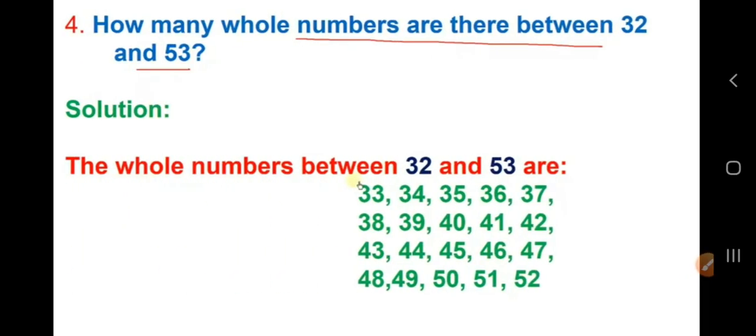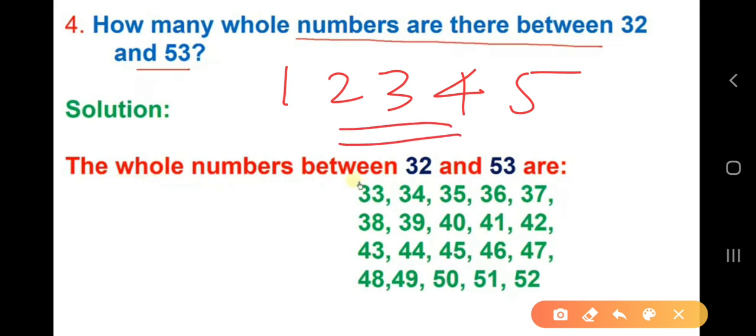How many whole numbers are there between 32 and 53? Before going to a bigger number, let me ask you how many numbers are there between 1 and 5? Let us write 1, 2, 3, 4, 5. How many numbers are there? 3 numbers are there. But, if you are doing 5 minus 1, your answer is 4. So, how you can get 3 is 4 minus 1 you should do. First, find the difference then minus 1 you should do.